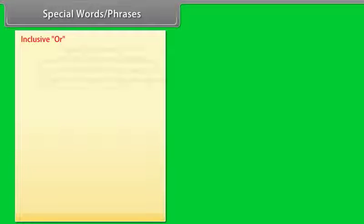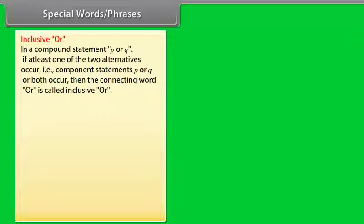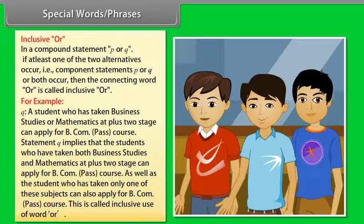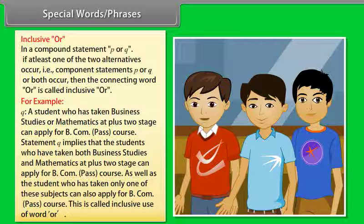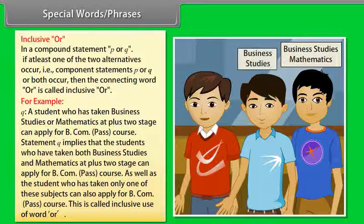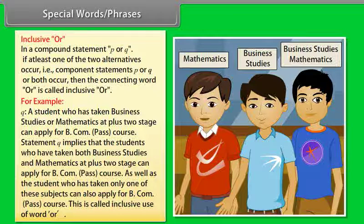Inclusive OR: In a compound statement P or Q, if at least one of the two alternatives occurs — that is, component statements P or Q or both — then the connecting word OR is called inclusive OR. For example: 'A student who has taken business studies or mathematics at the plus 2 stage can apply for BCom pass course.' This implies students who have taken both, or only one of these subjects, can also apply — this is the inclusive use of OR.